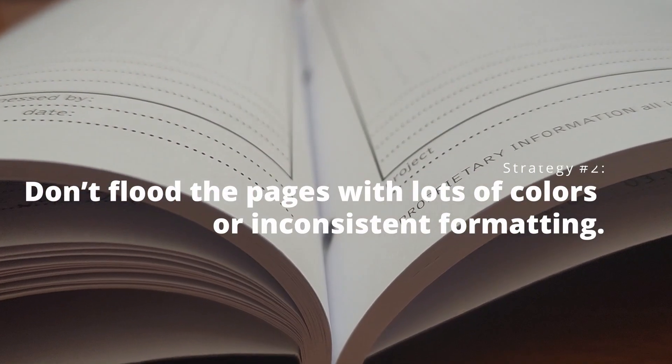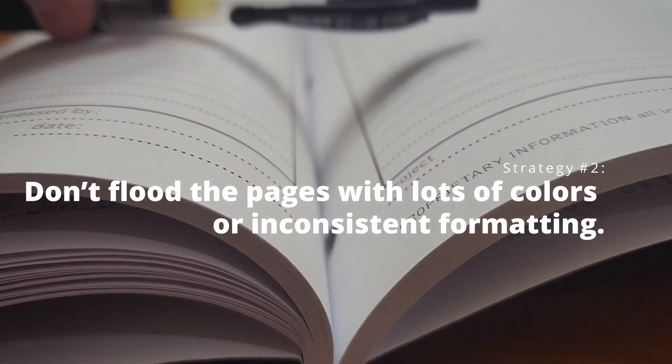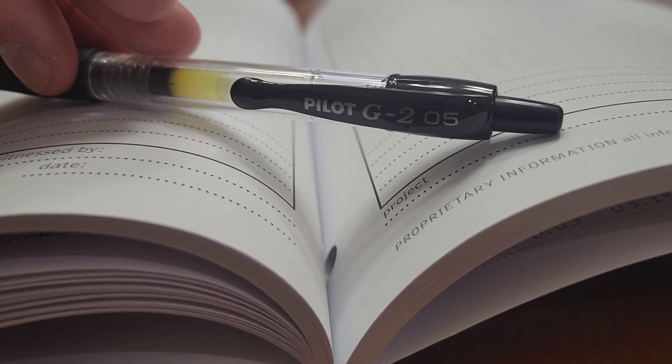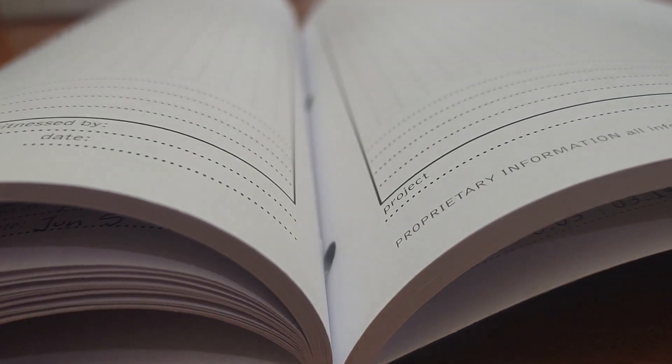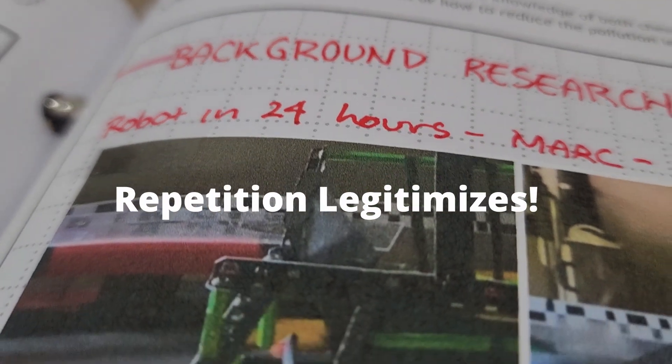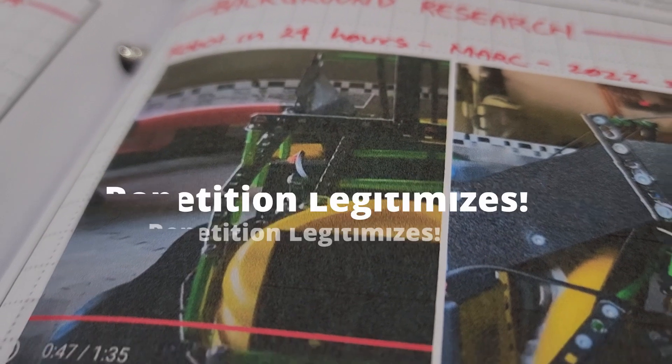The second one is don't flood the pages with lots of colors or inconsistent formatting. Make it easy for the eyes to look over the page and get familiar with the information. And just like in jazz, repetition legitimizes, so make sure that the format is consistent throughout as well.